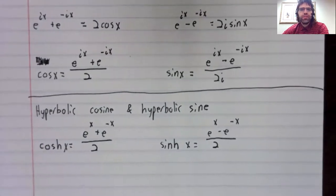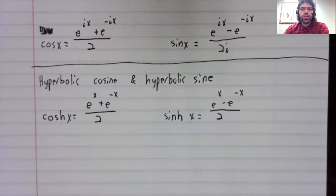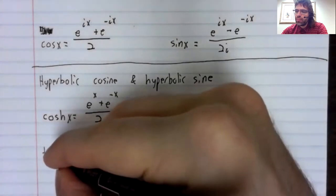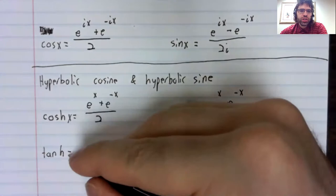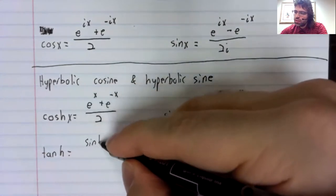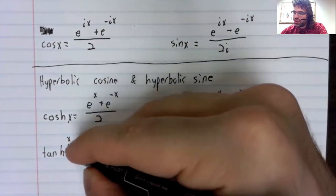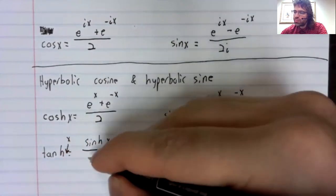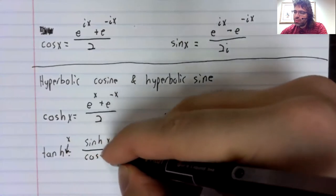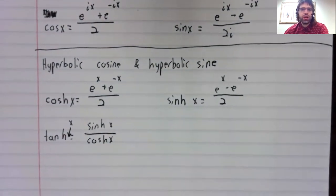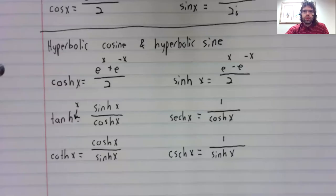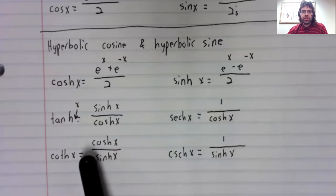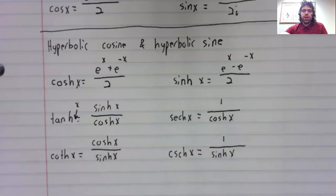Once we've defined the hyperbolic cosine and the hyperbolic sine, the other four hyperbolic trig functions are defined in the natural way. For example, the hyperbolic tangent is the hyperbolic sine over the hyperbolic cosine. The hyperbolic secant, cotangent, and cosecant are also defined in the natural way.